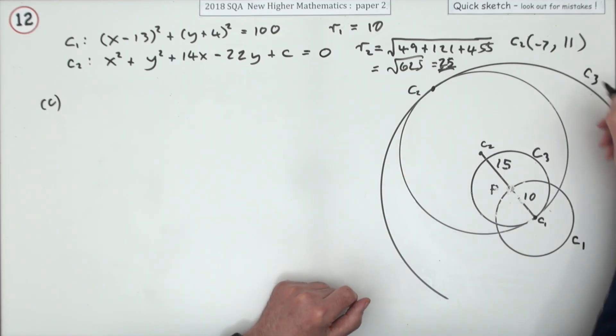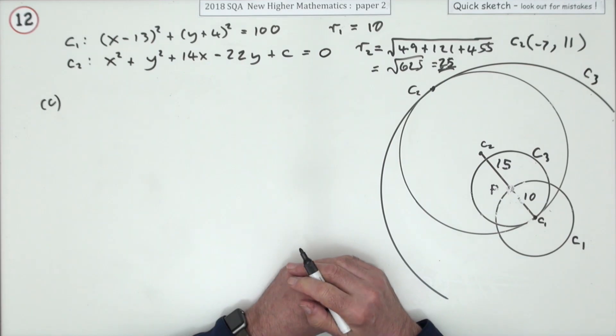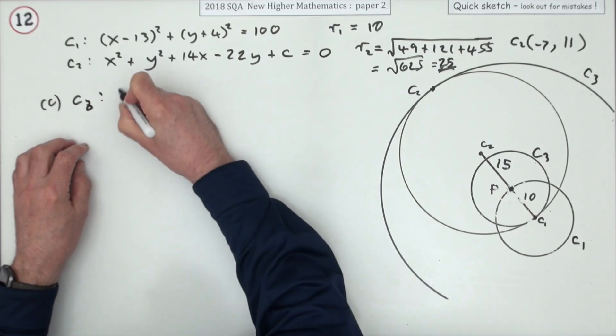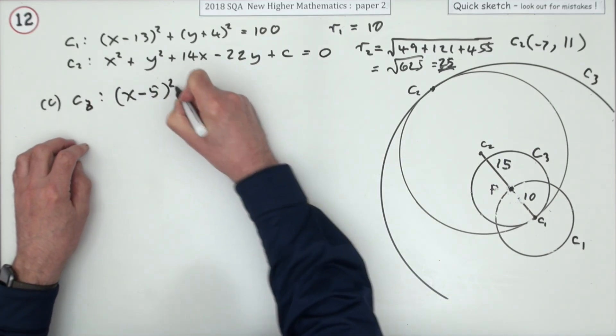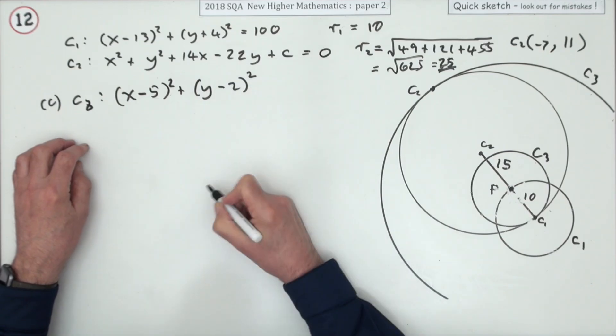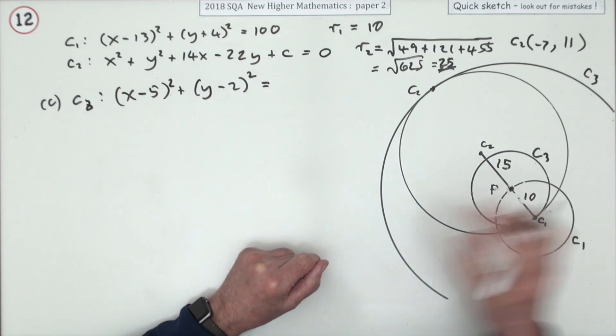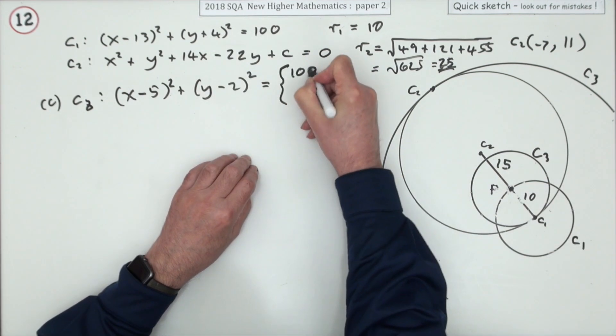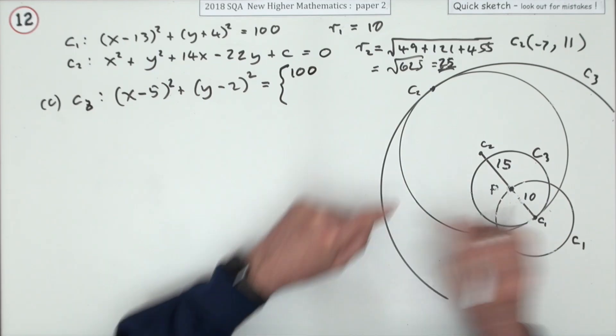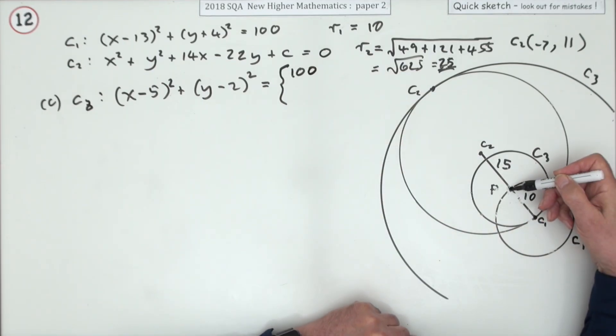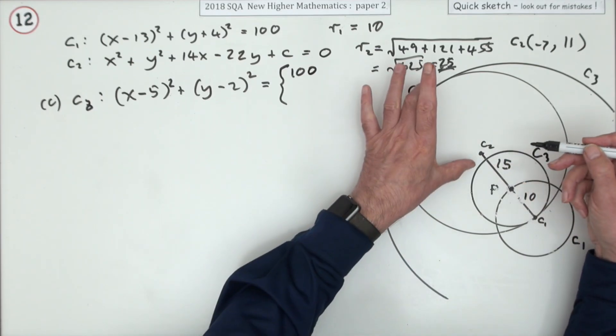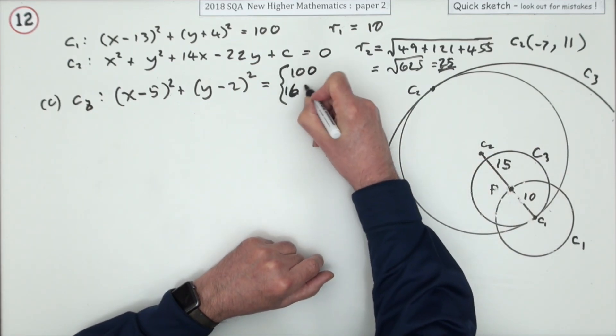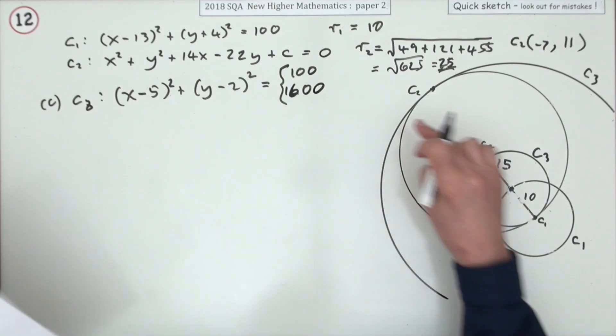Those are certainly two candidates. If it just said C2 and C3 touch internally, there's the case where C3 is smaller, and there's the case where C3 is larger. They've both got internal tangent points. So which one is it? They've both got the same center. As far as C3 is concerned, the equation is going to start (x - 5)² + (y - 2)² equals whatever the radius is. If it's the smaller one, the radius is 10, the same as this, so that'll be 100 when you square it. If it's the larger one, the radius would be—well, the distance from P to the center is 15, the larger circle was 25, so that's 40 altogether. So that would be 40 squared, which would be 1600.